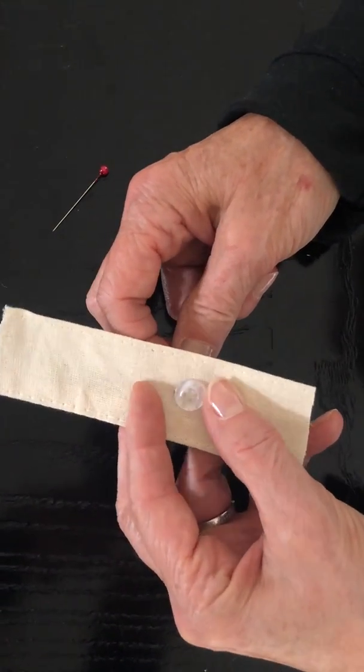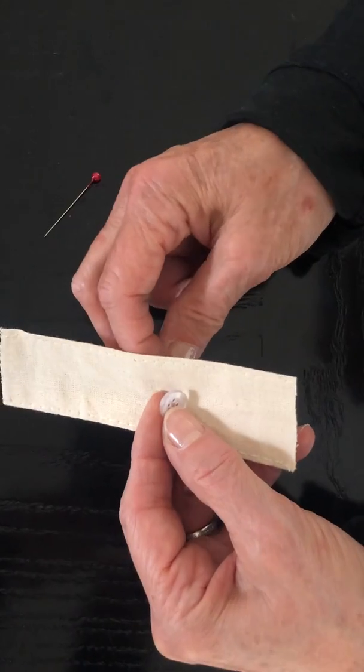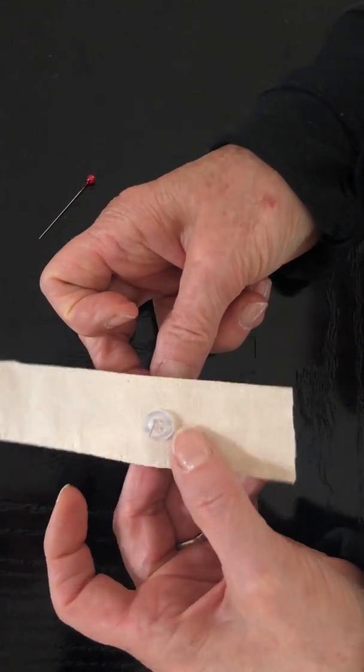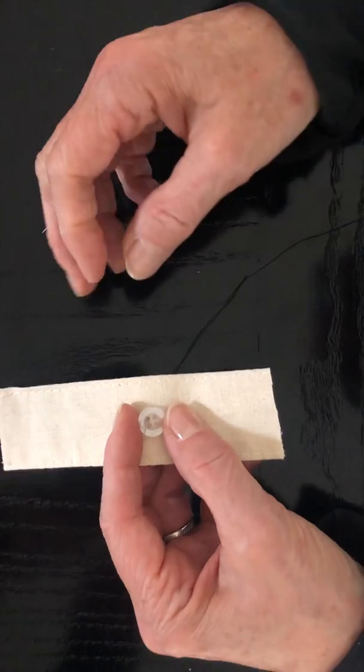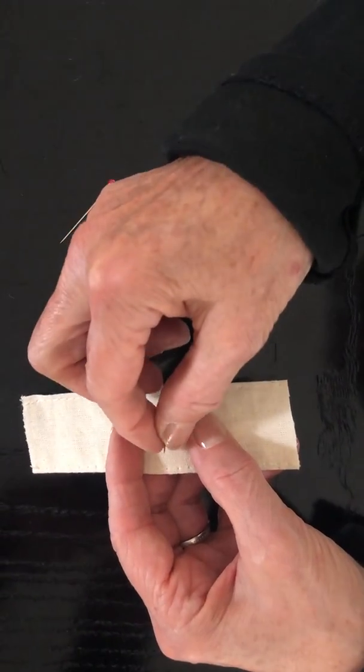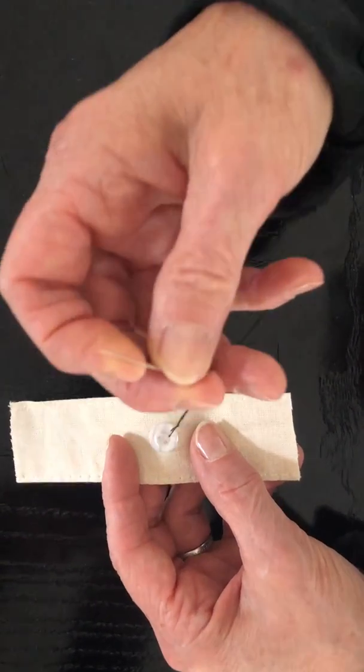So I'm going to come from beneath the fabric. I have a knot in my thread and I'm just going to pick any buttonhole I want and pull it right up through.